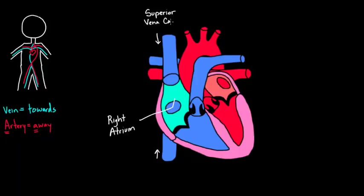And this is a vein, of course, because it's bringing blood towards the heart. And down here, the inferior vena cava. So these are the two directions that blood is going to be flowing.